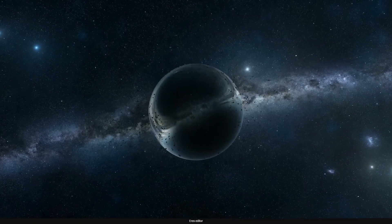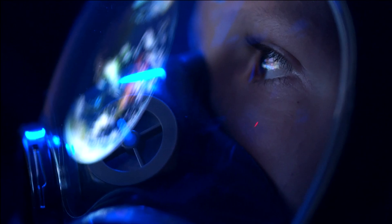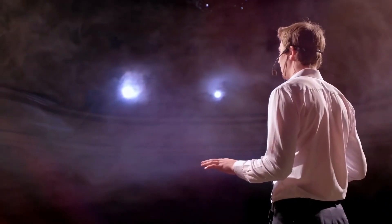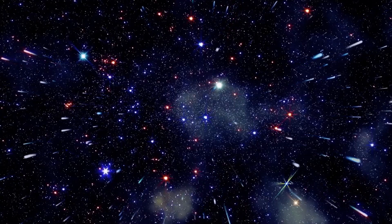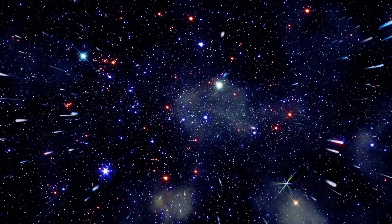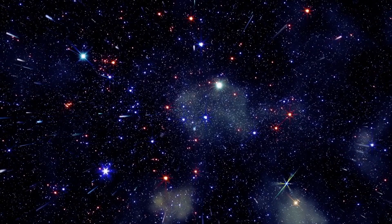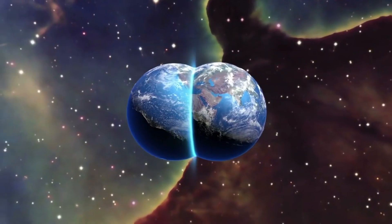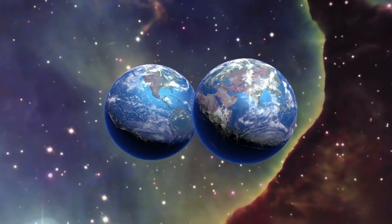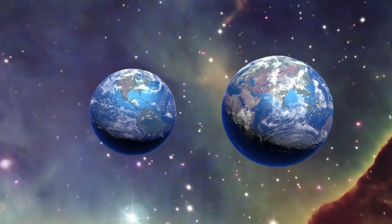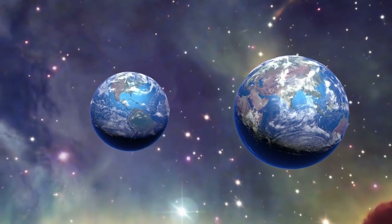It is important to differentiate between the whole universe and the observable universe. The entire universe encompasses all matter, energy, space, and time. In contrast, the observable universe refers to what we can observe from Earth. This slice is limited in size at about 93 billion light-years across.